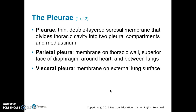The pleurae are thin, double-layered serosal membranes that divide the thoracic cavity into two pleural compartments and the mediastinum. The parietal pleura is the membrane on the thoracic wall, the superior face of the diaphragm, around the heart and between the lungs. The visceral pleura is the membrane on the external lung surface.